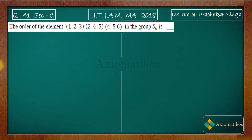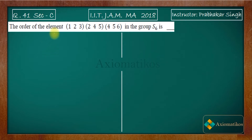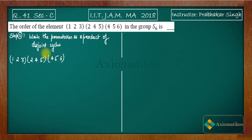Hello dear students, welcome to Axiomatic. This video is part of the solution series for IIT JAM 2018, and we are doing Problem 41 of Section C. This problem is from abstract algebra. We have to find the order of a given element in S6. We will do this step by step, and it is a very easy problem.